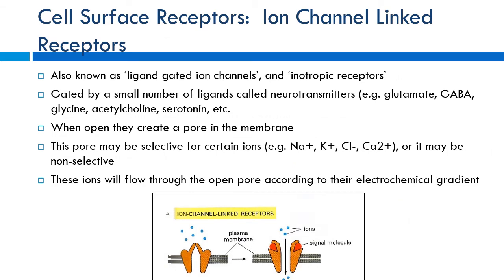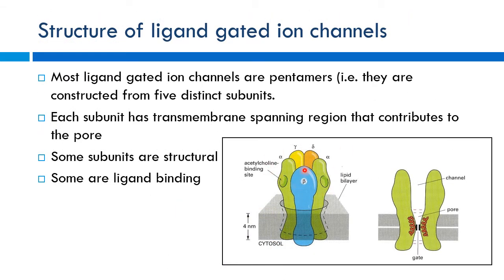Ion channel receptors are made up of different protein subunits. By changing these subunits you can change how the drug interacts with the receptor and how effective it is. For example, a tissue might have two alpha subunits while another has only one. There's usually a specific binding site — like an acetylcholine binding site — embedded in the lipid bilayer where the drug binds, causing the channel to open. Acetylcholine is important for vagal nerve signaling and neuromuscular effects.